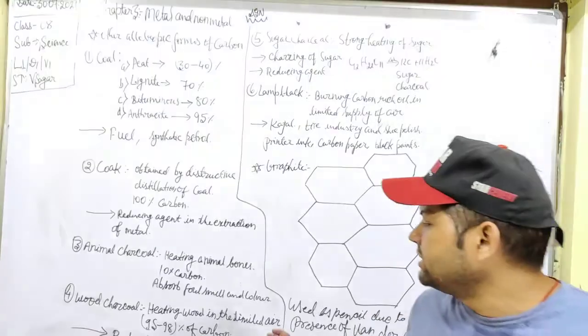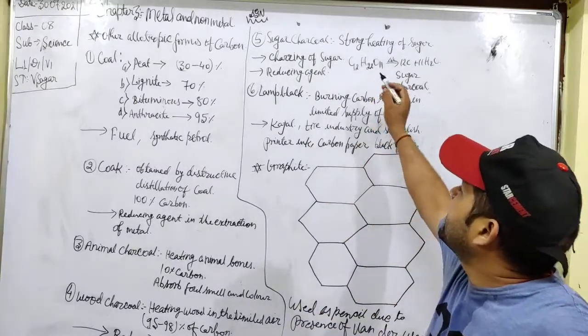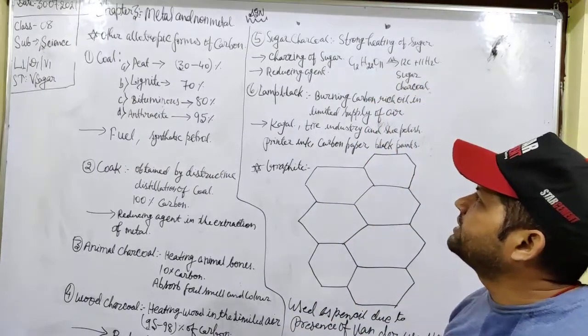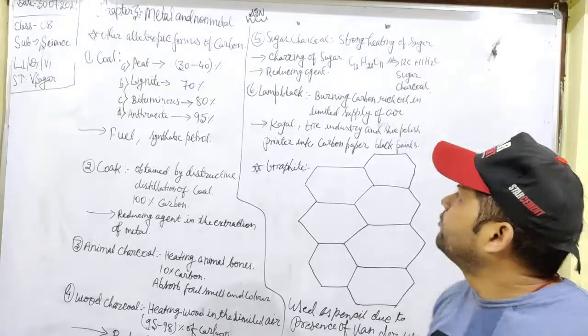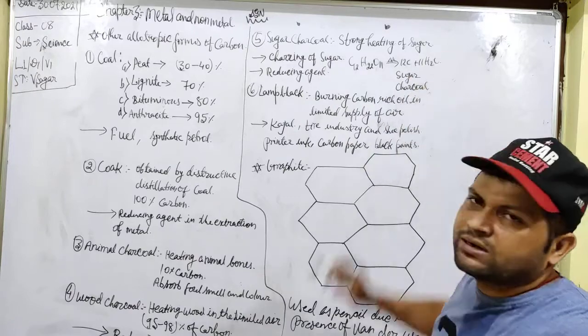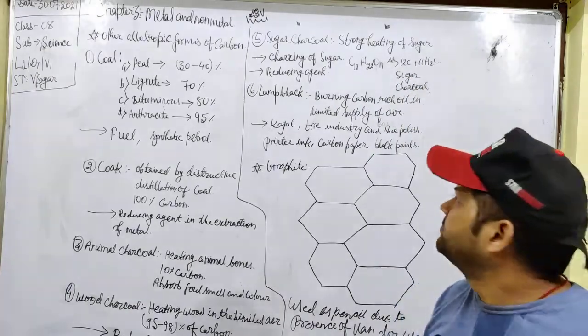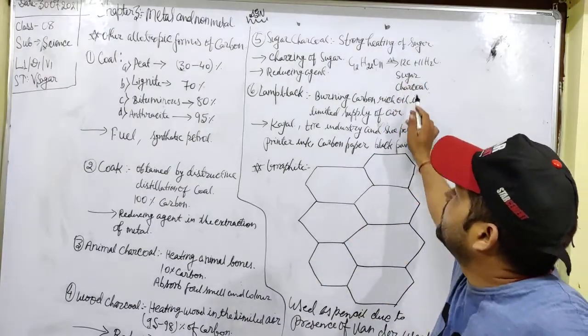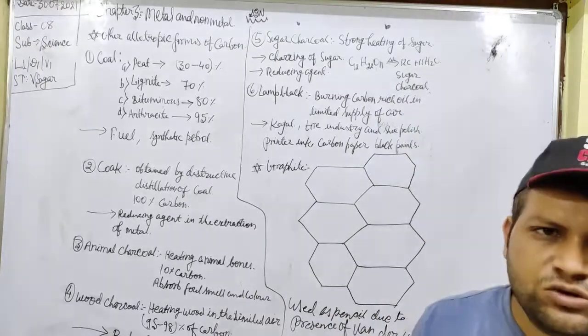And now, sugar charcoal. Sugar charcoal is obtained from the hard heating of sugar. It is called as charring of sugar. When sugar is decayed, then 12 carbon atoms and 11 water molecules form. It is called as sugar charcoal. It is used as reducing agent.